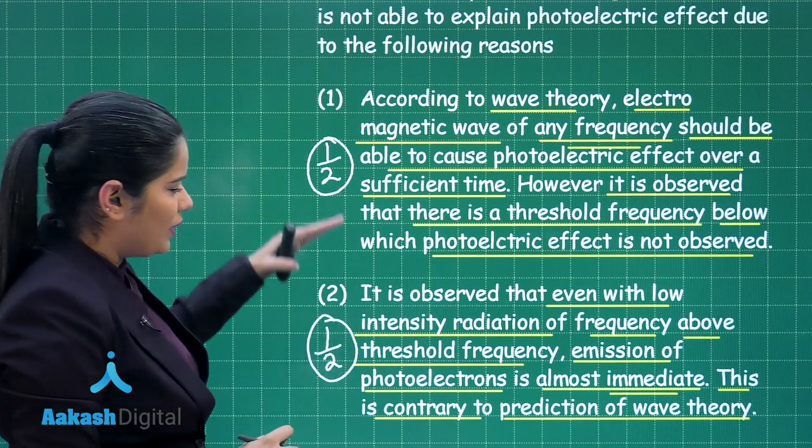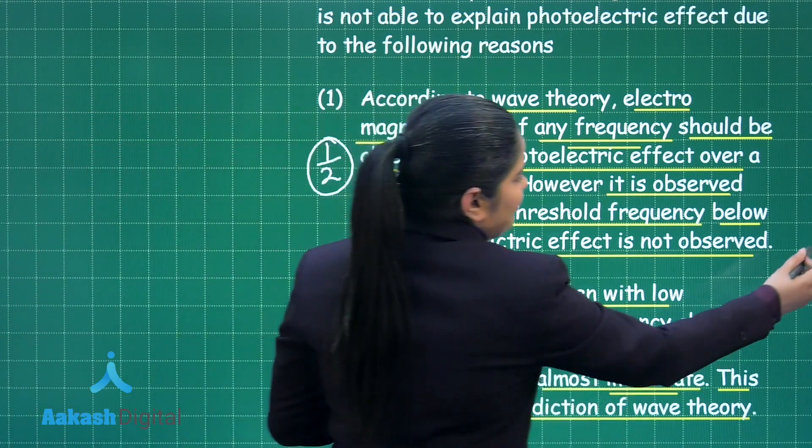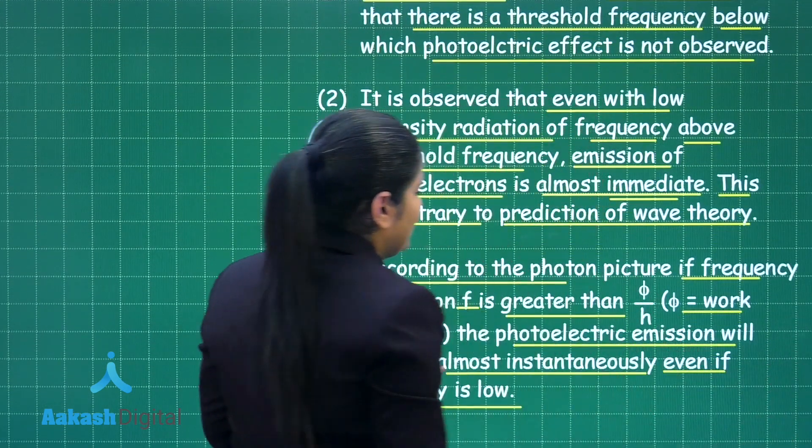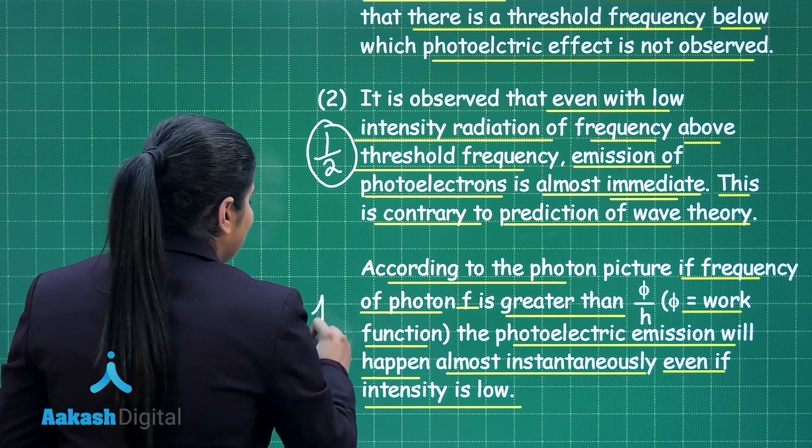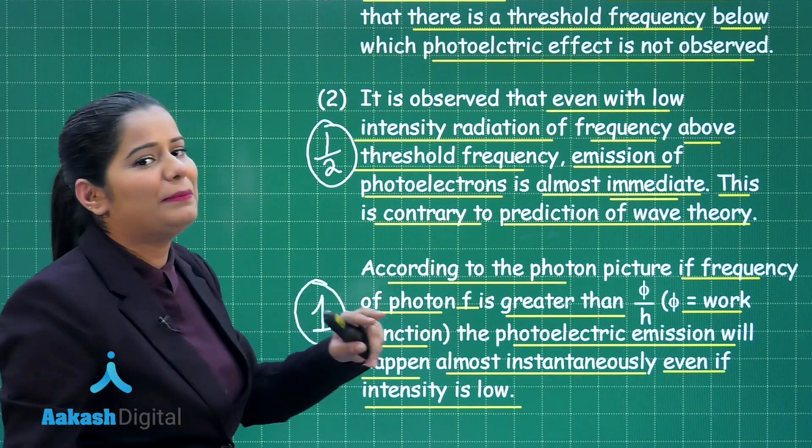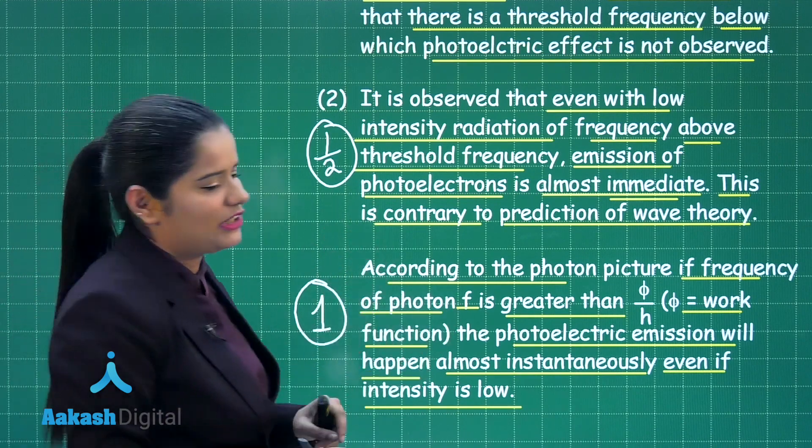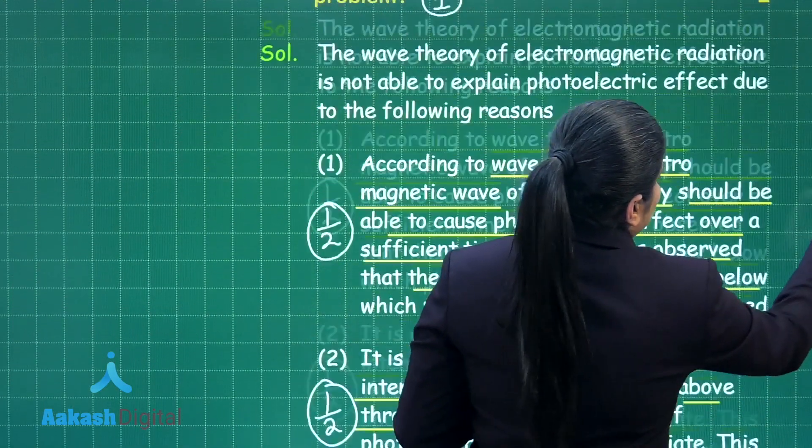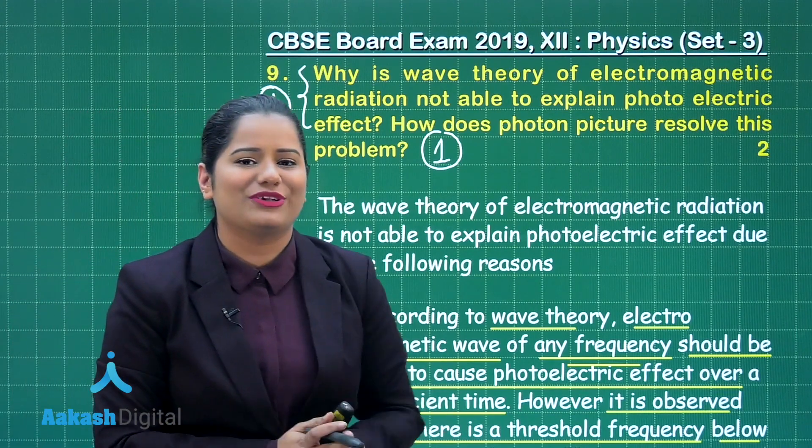You will get one mark for explaining why wave theory is unable to explain the photoelectric effect and how the photon picture resolves that problem. This is how you will get the two marks for this particular question. I hope the discussion of this question is quite clear to you. Now, let us move on to the discussion for the next question.